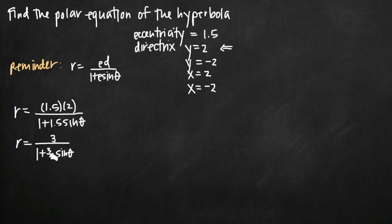Now that we have a fraction in our denominator, we want to find a least common denominator and simplify this whole fraction here. So what we want to do is multiply that by 2 over 2 to make it a common denominator with this 3 halves here. So we'll get r equals 3 over 2 over 2 plus 3 sine theta all over 2.